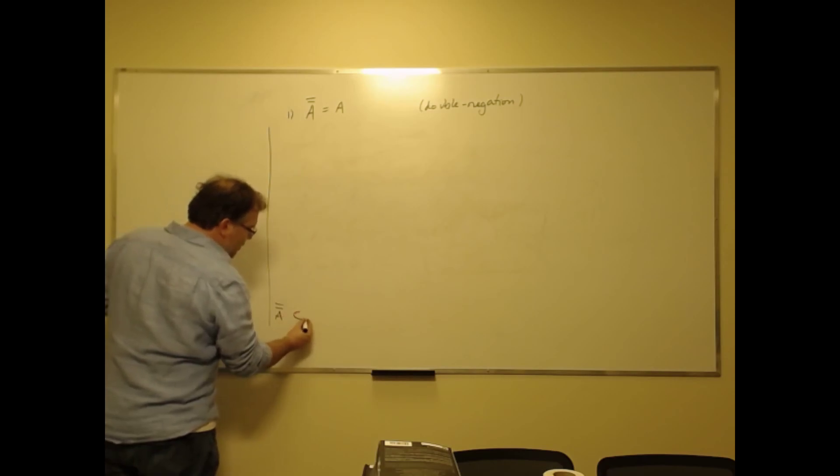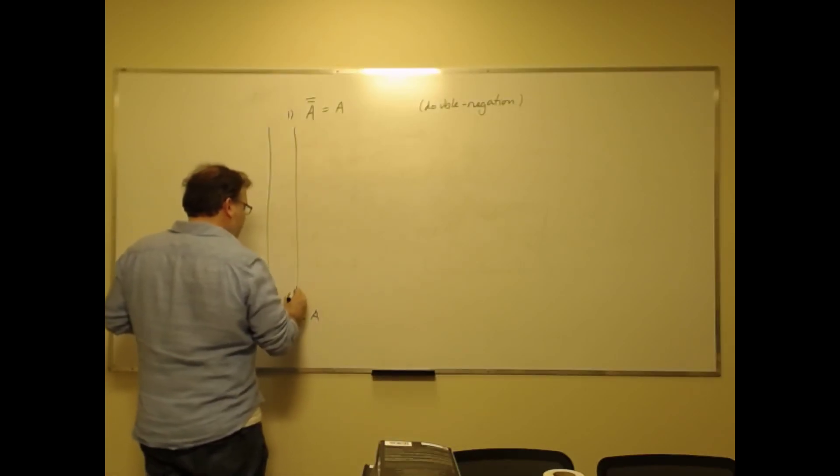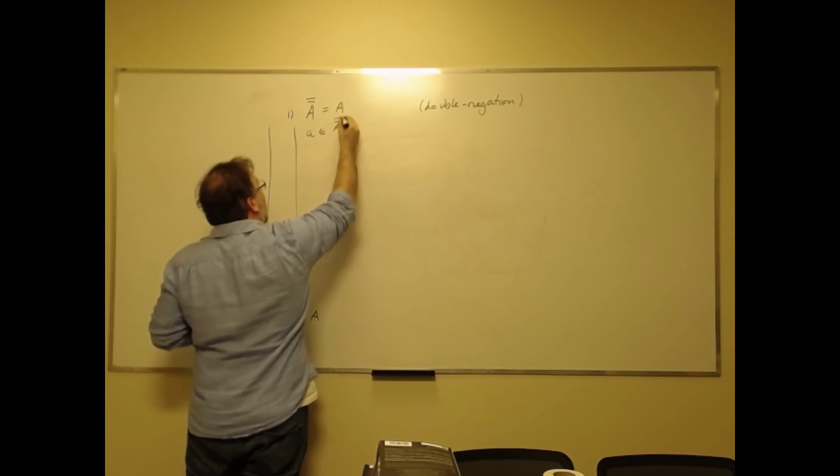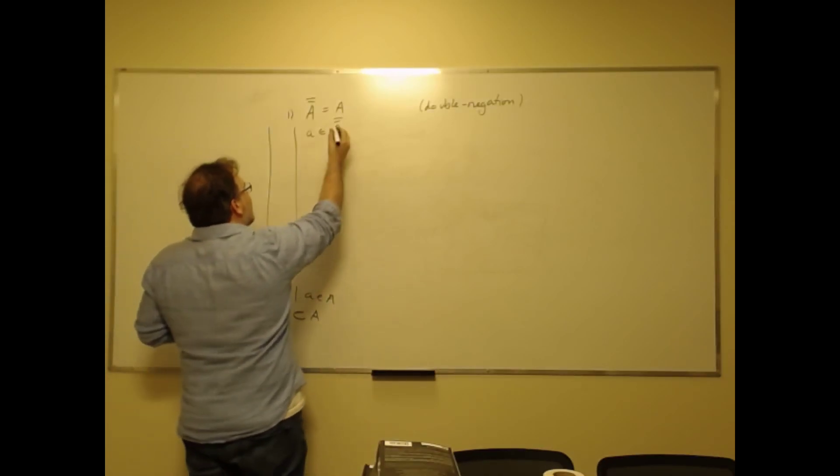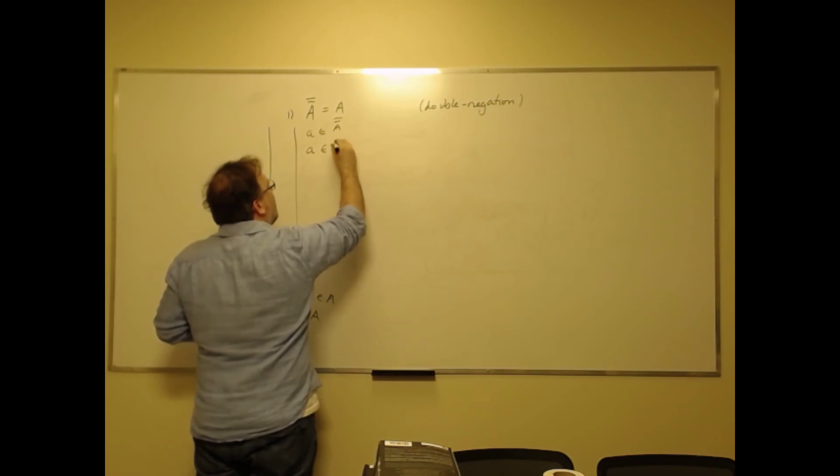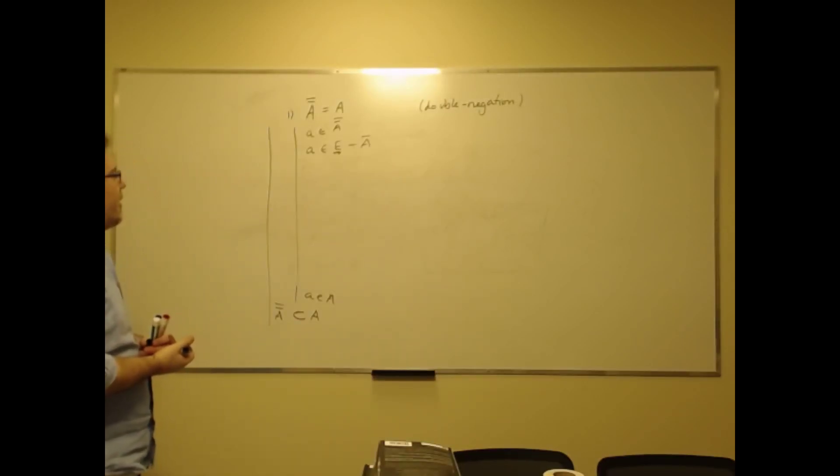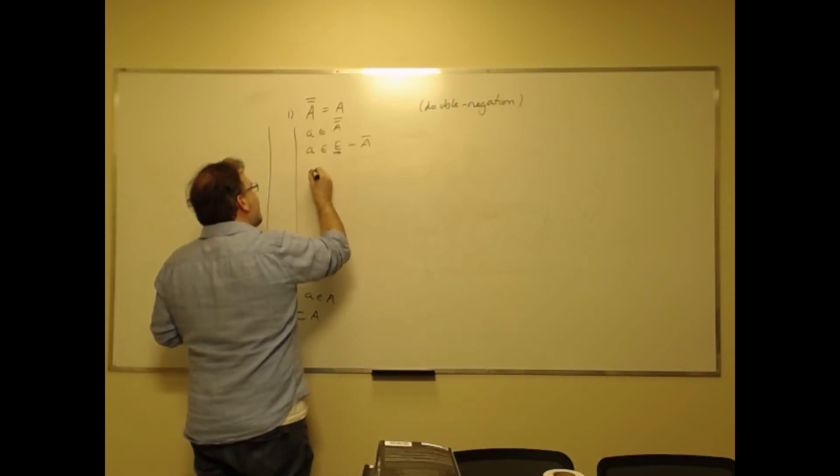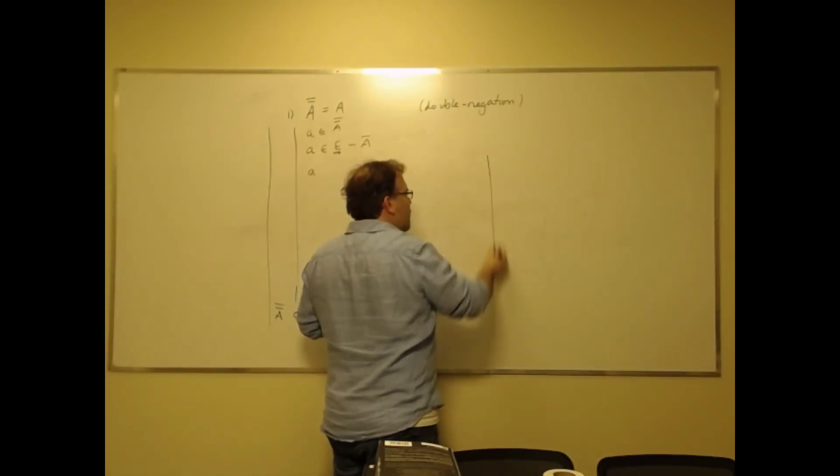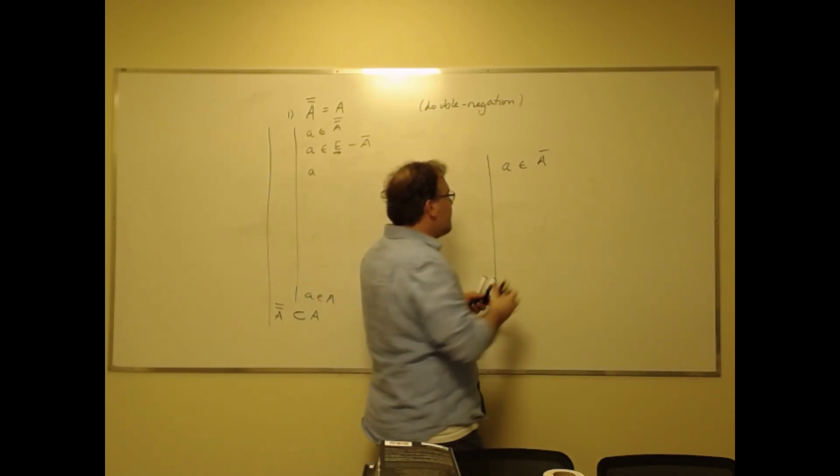So first we're going to try to show that the complement of the complement of A is a subset of A. So we're going to suppose that some object is in the double complement and then try to show that it's in A as a result. Now since we're using the notion of relative complement for some set E, the environment, the complement of A is going to be E minus A. And I should have—I forgot the Fitch style idea, or to be more precise, I'll do it with the relative complement.